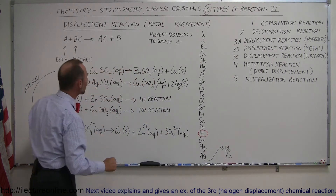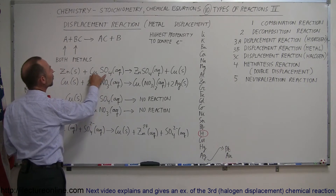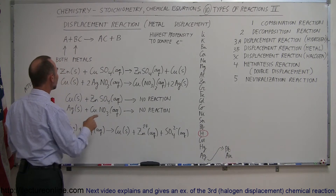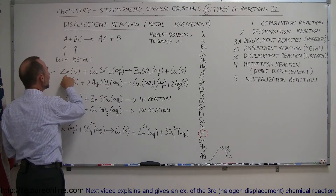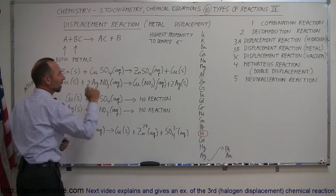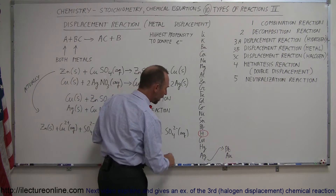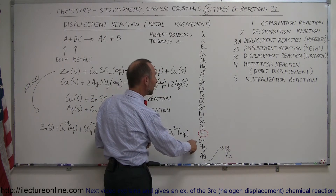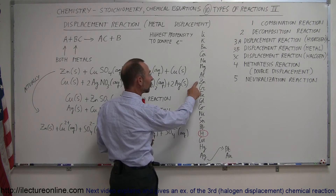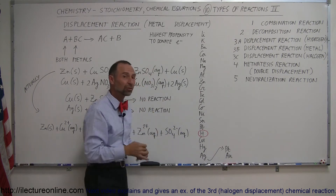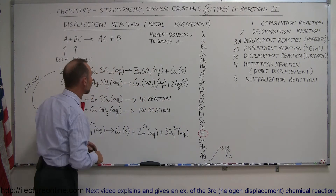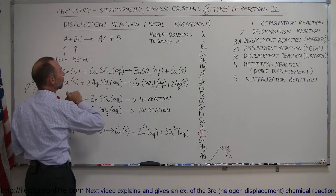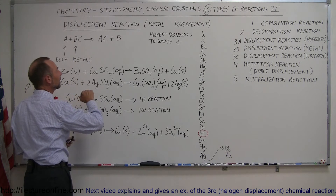Let's see an example. Let's say we have copper sulfate in an aqueous solution. If you then throw zinc in there, let's look at copper and zinc on the activity list. Copper is down here — not very active — and zinc is higher up on the list. So zinc is more likely to donate electrons than copper is.